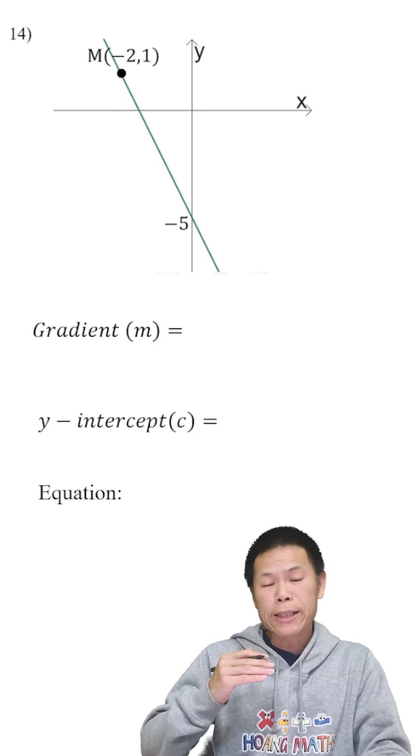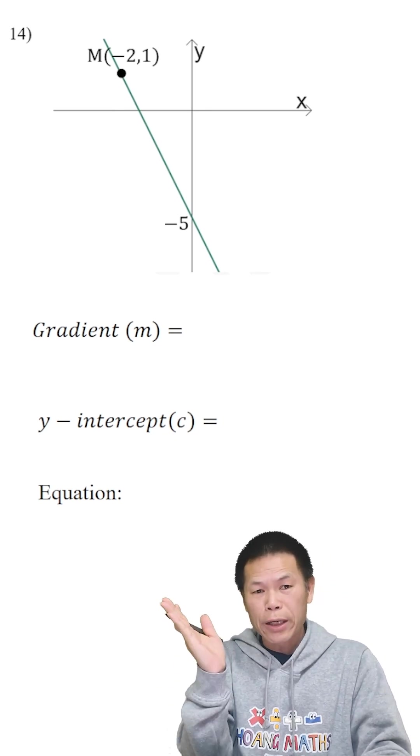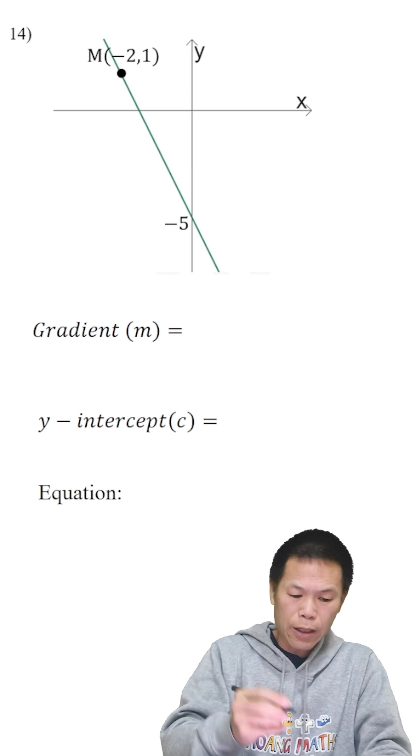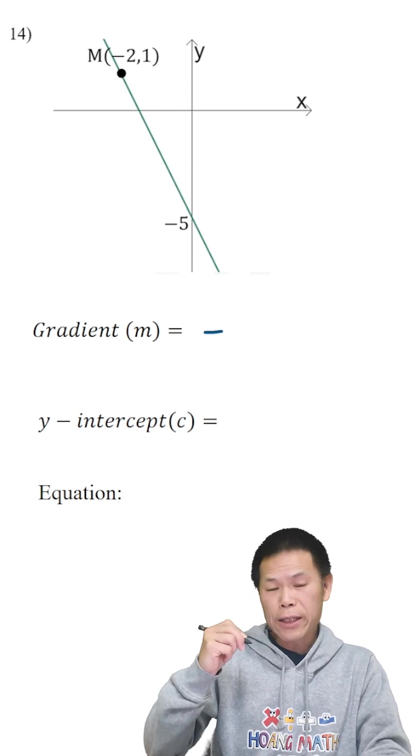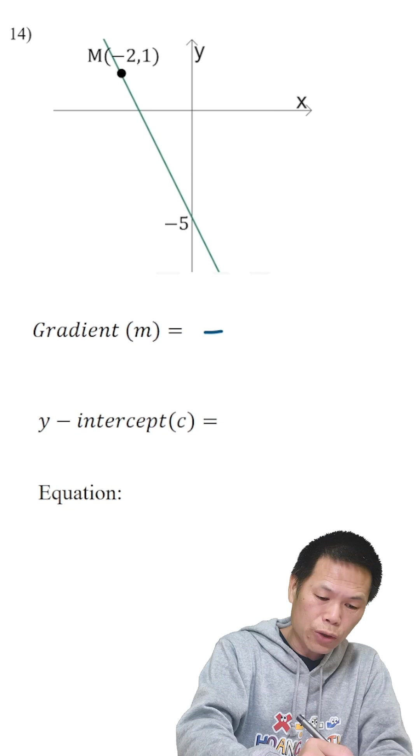So we know that the gradient is negative because it's gone this way, right? We have a negative gradient. Let me just write negative first and we need to find rise and run. So let me just draw a triangle like this.